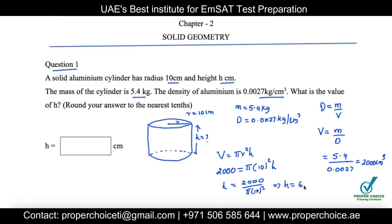The question asks us to round to the nearest tenths. Looking at the tenths place — 6.3666 — since the digit after the tenths place is 6, which is 5 or above, we add 1 to the tenths place. So the height is 6.4 centimeters.